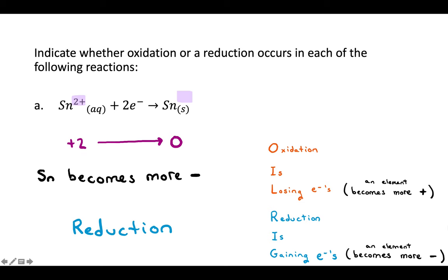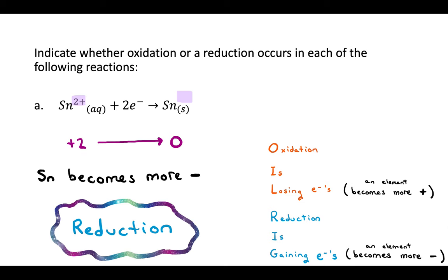So here tin would be reduced — we have reduction happening, and that's our answer. What would a reaction like this look like? You would have aqueous tin — that means the tin is dissolved in water, you wouldn't be able to see it. You send electrons in, electricity, and suddenly the tin that was dissolved turns into solid tin, as if from nowhere tin appears.